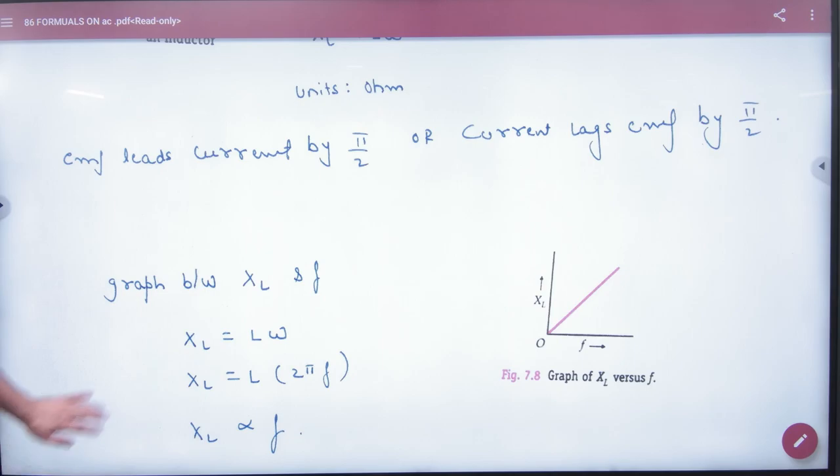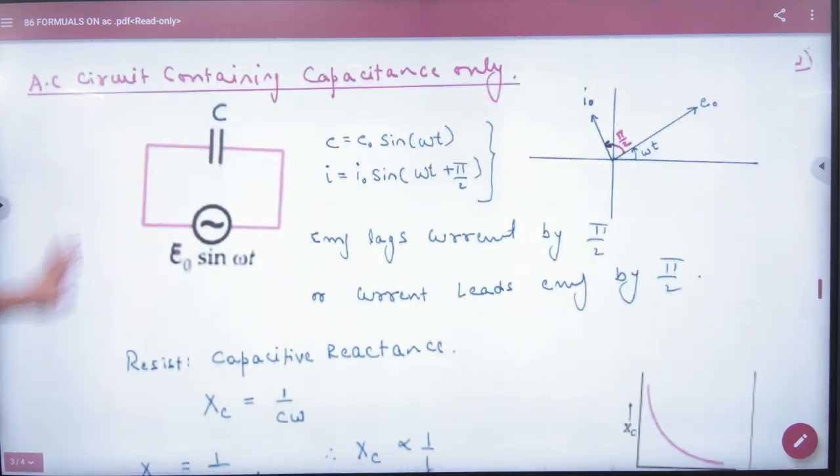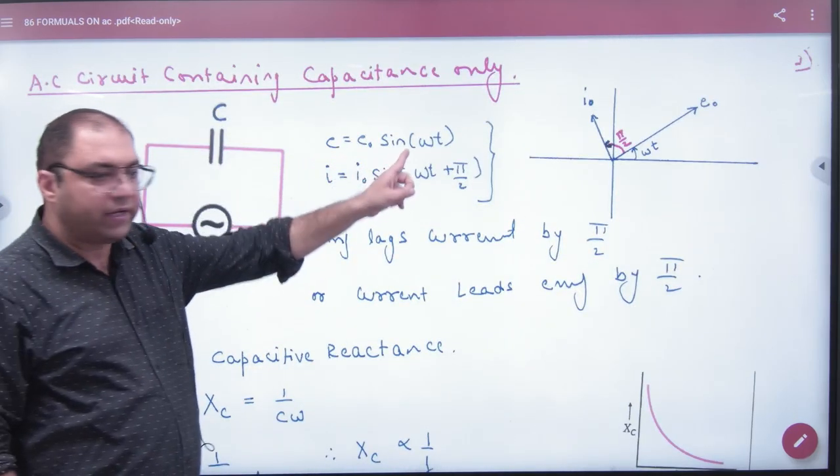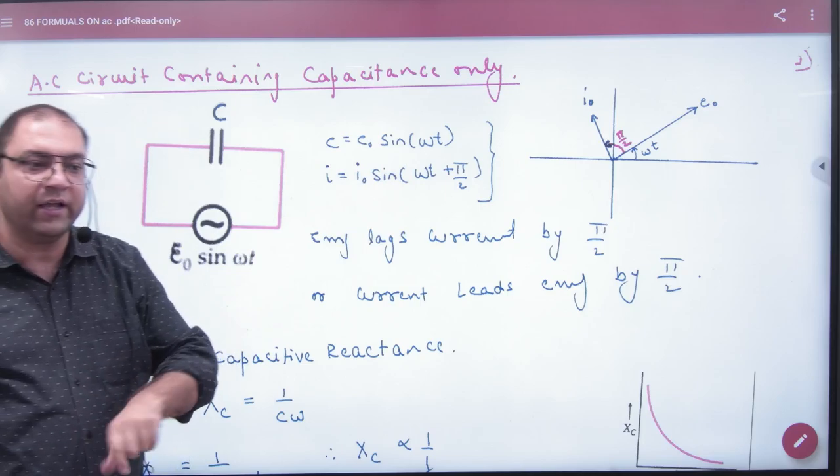And in the same way, only capacitor: E0 sin omega t. So current is I0 sin omega t plus pi by 2.